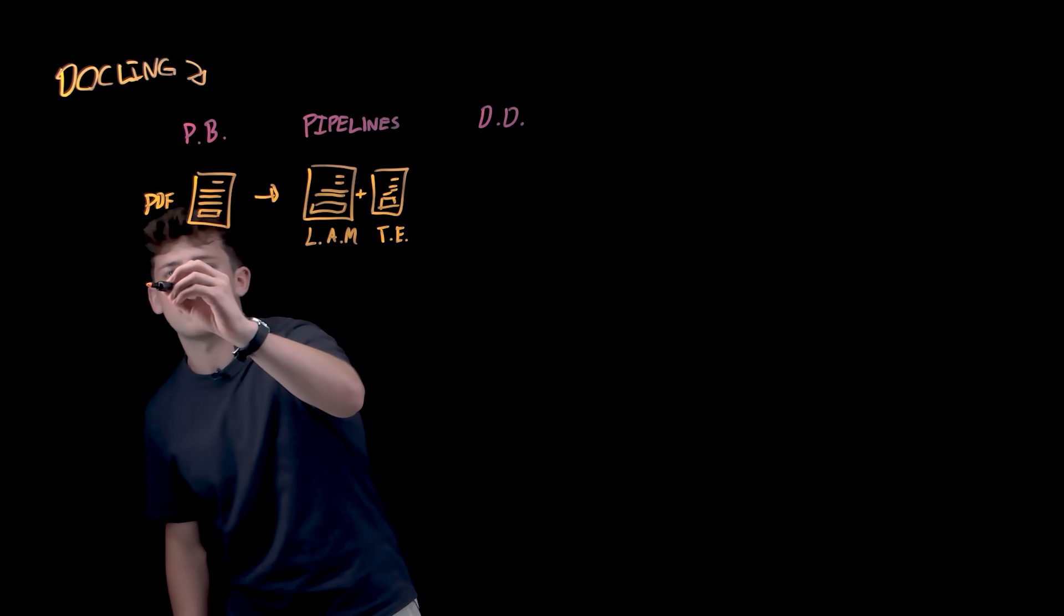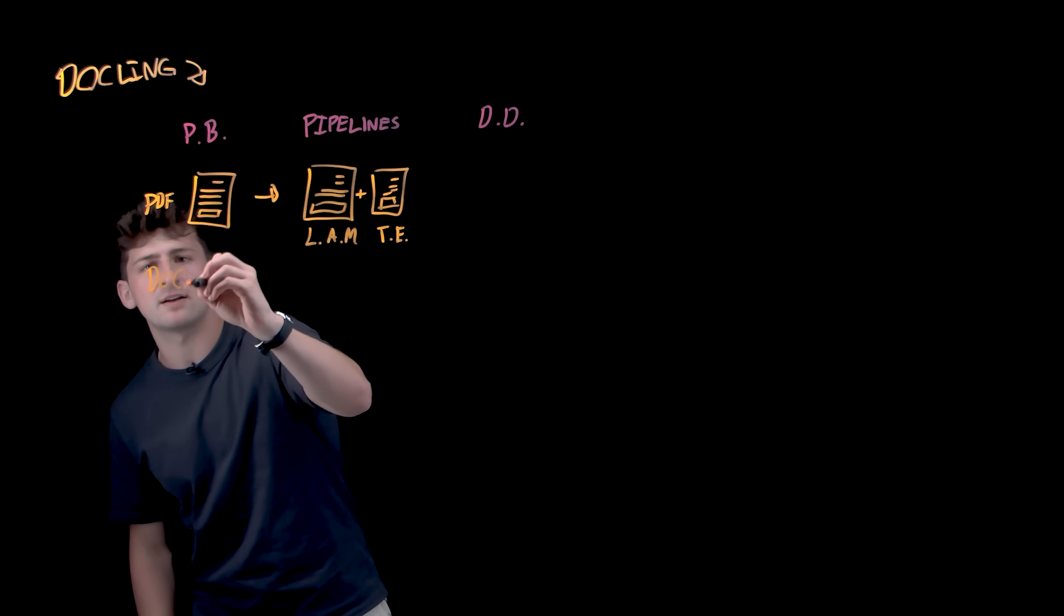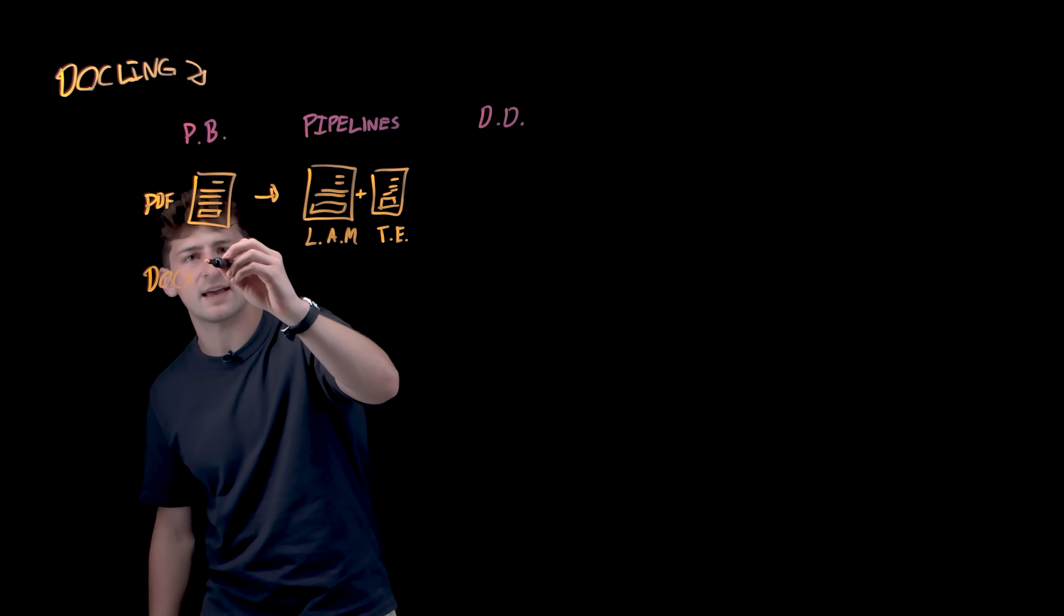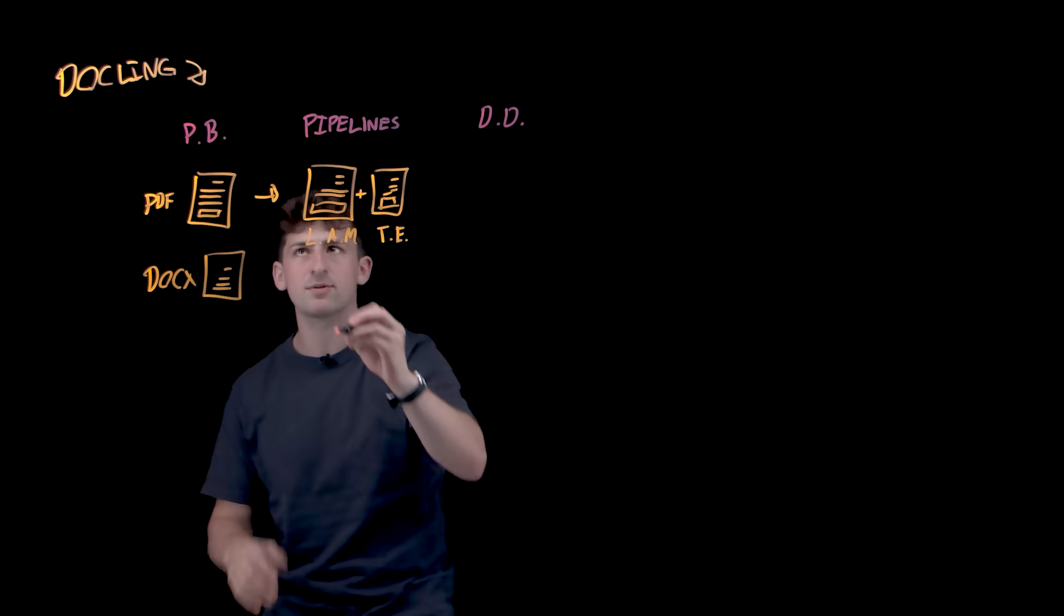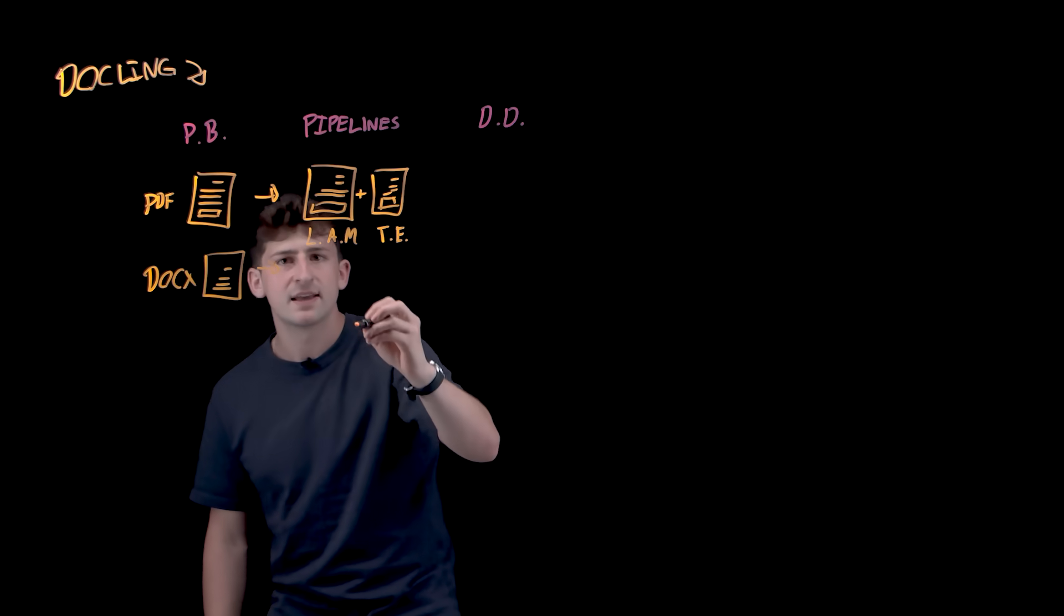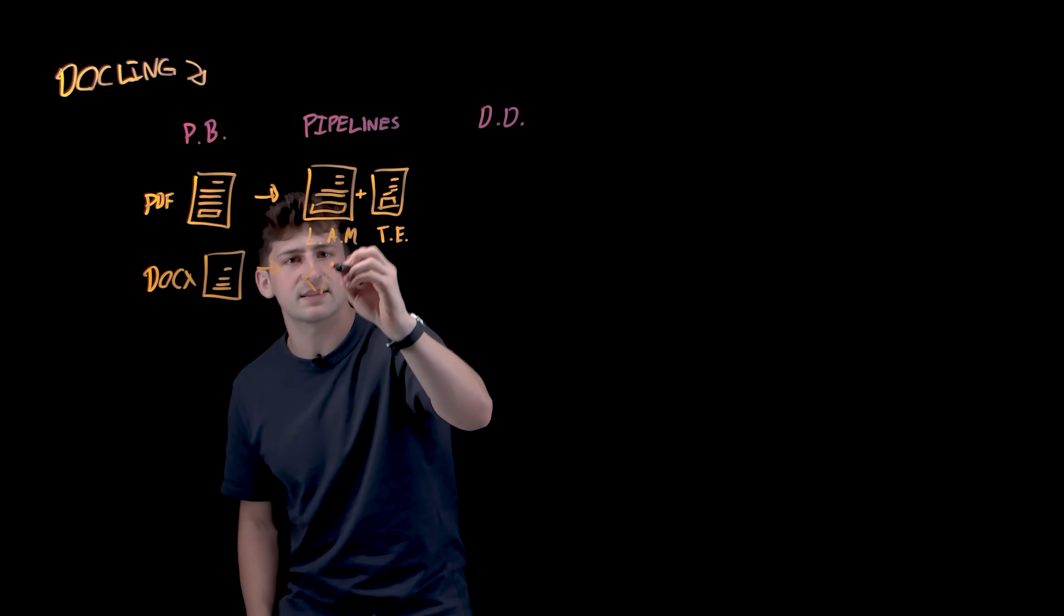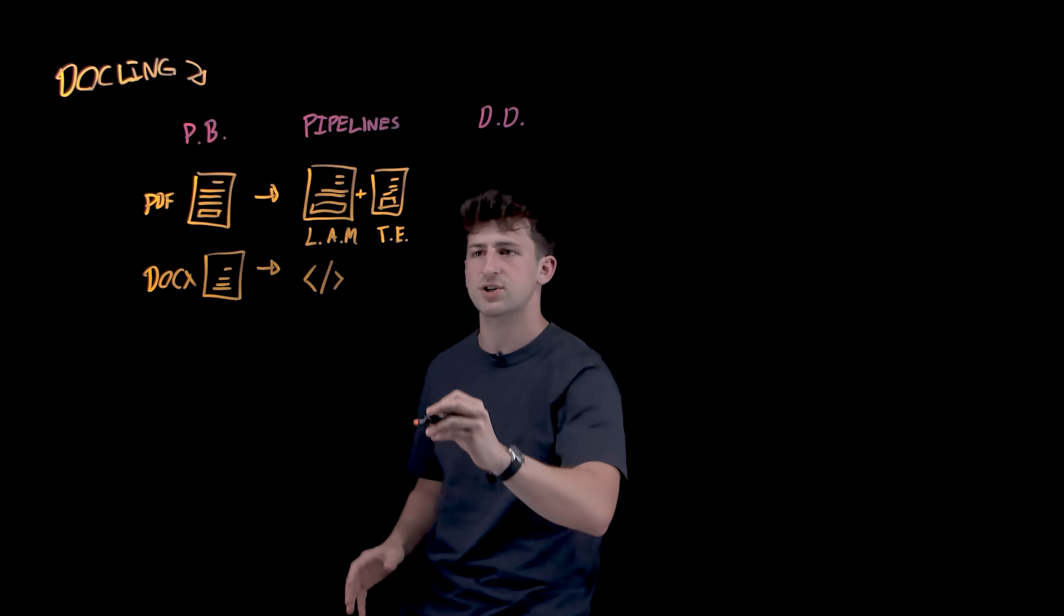Now, let's say we're working with, say, for example, a markdown-based type of structure like HTML or Docx. So we have this same type of file format here. Now, after the parser backend, the pipeline is actually transforming this content, which already has some type of structure,